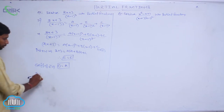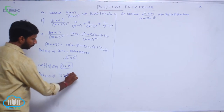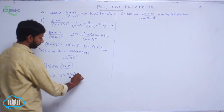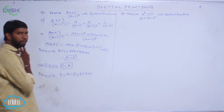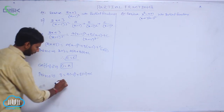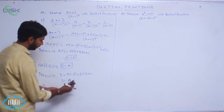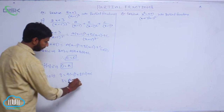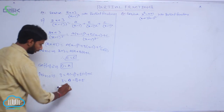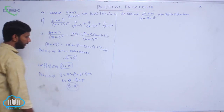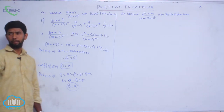Put x = 0 into condition 2: 3 = A(-1)² + B(-1) + C. Substituting A = 0 and C = 5: 3 = 0 - B + 5, which gives B = 2. So A = 0, B = 2, and C = 5.